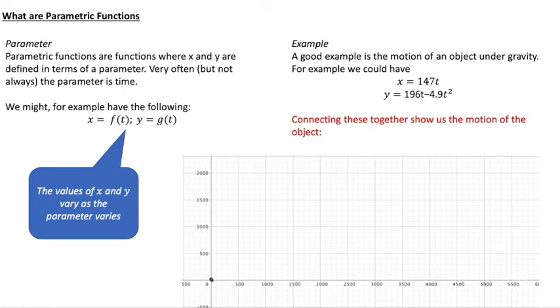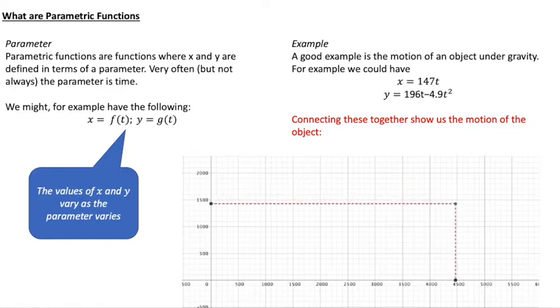Okay and we can connect those two motions together and that will show us the motion of the object itself. So we can see the green dot is the object now and both the y and the x motion is represented.